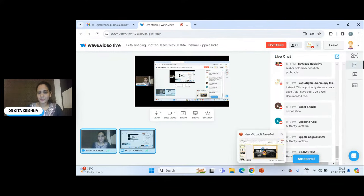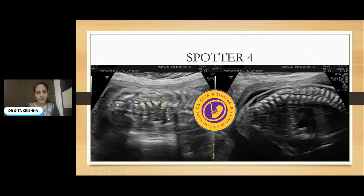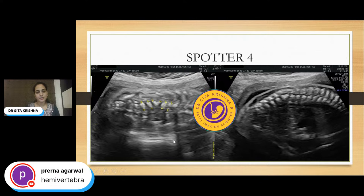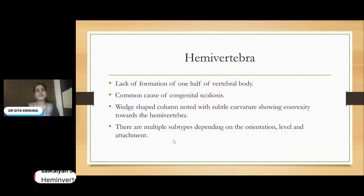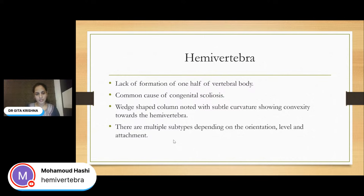Yes, it is hemivertebra. As this is the sagittal image, we can see the continuity of the skin line, but a focal kyphotic defect is noted, caused by the hemivertebra. The key here is to screen the spine in coronal view, where the alignment is very subtle, causing scoliosis towards the anterior aspect due to this hemivertebra. Hemivertebra is due to lack of formation of one half of the vertebral body, which is the most common cause of congenital scoliosis. The wedge-shaped column with subtle curvature showing convexity towards the hemivertebra is the key. There are multiple subtypes depending upon orientation, level, and attachment.